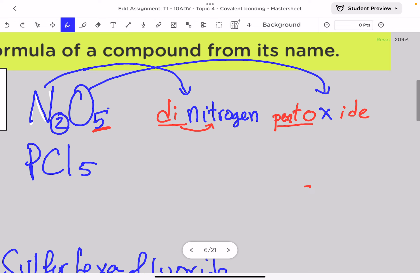Let's take another example, PCl5. So P is phosphorus and Cl is chlorine. As I mentioned, the termination of the second element only must be changed to 'ide,' so instead of writing chlorine, I will write chloride.